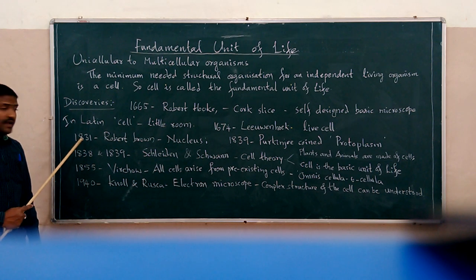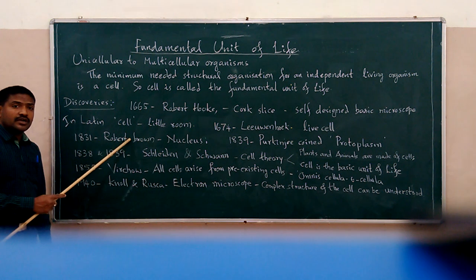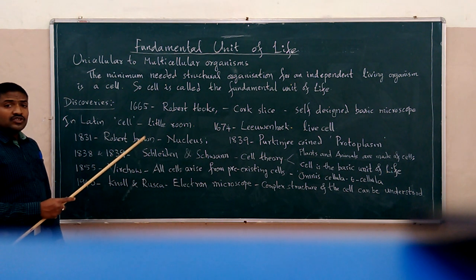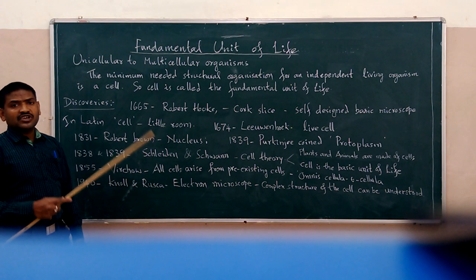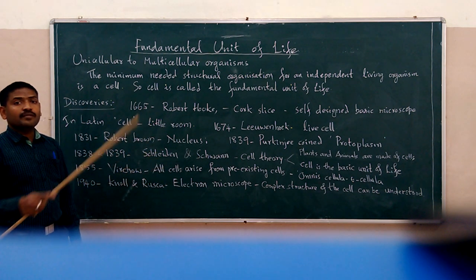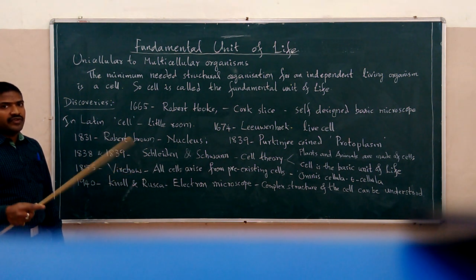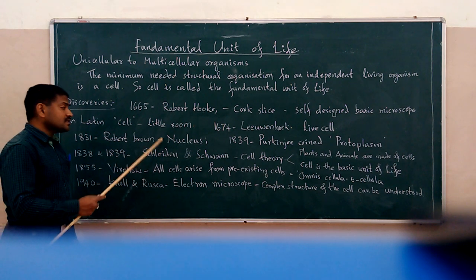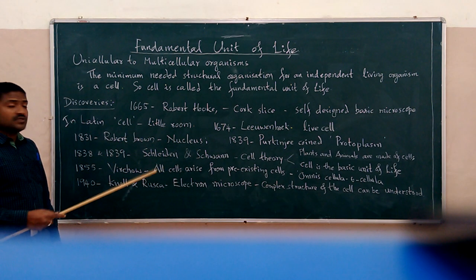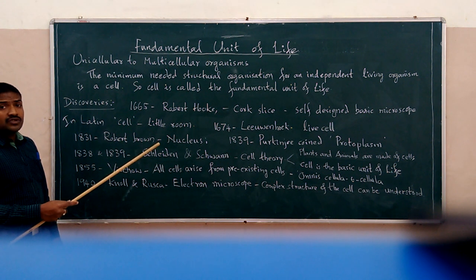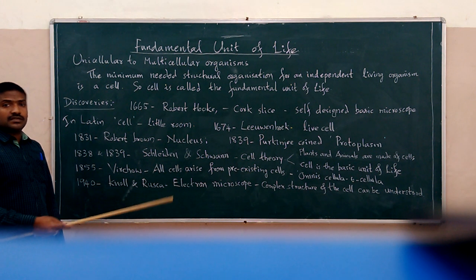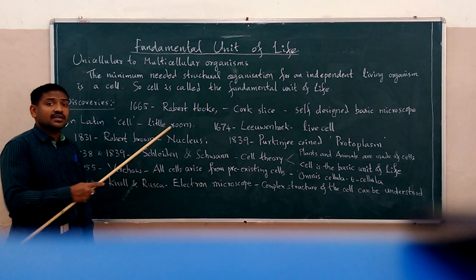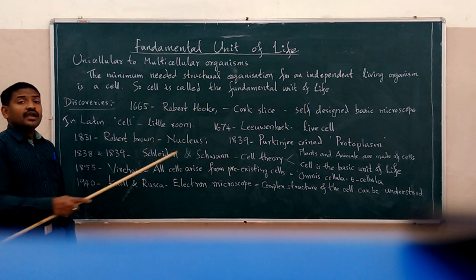In the year 1831, Robert Brown discovered the nucleus and also coined the term 'nucleus'. The biological nucleus is the central functional region of the cell, covered by a double-layered membrane. The reason we specify 'biological nucleus' is to distinguish it from the use of the word nucleus in chemistry.